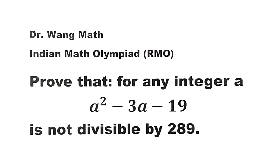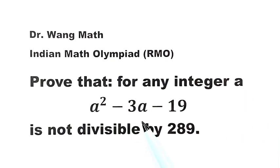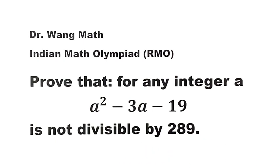In this video, we'll be solving a question from the Indian Math Olympiad. The question is: prove that for any integer a, a squared minus 3a minus 19 is not divisible by 289.